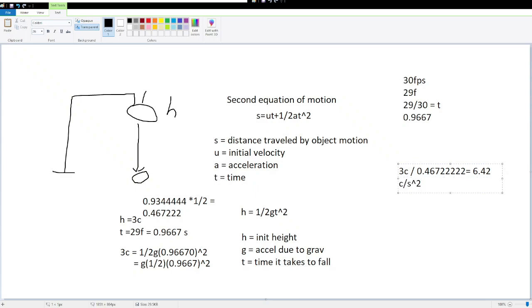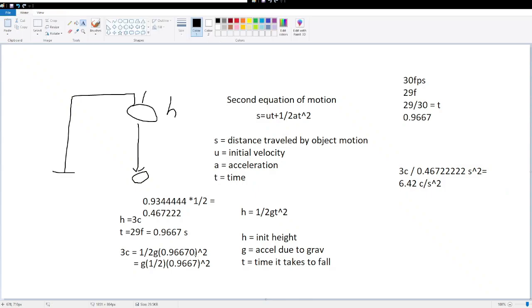6.42 isn't the exact number, it's a pretty good rounding. Our unit is carts per second squared because we have carts on the top, carts divided by second squared. We have seconds squared and not just seconds because we squared this value, so that means our unit has to square.